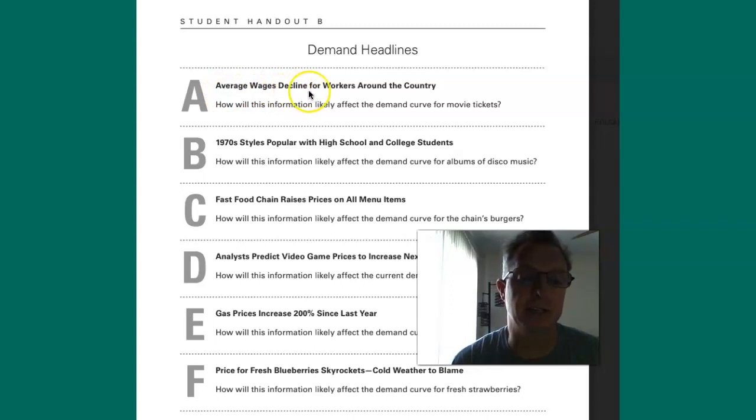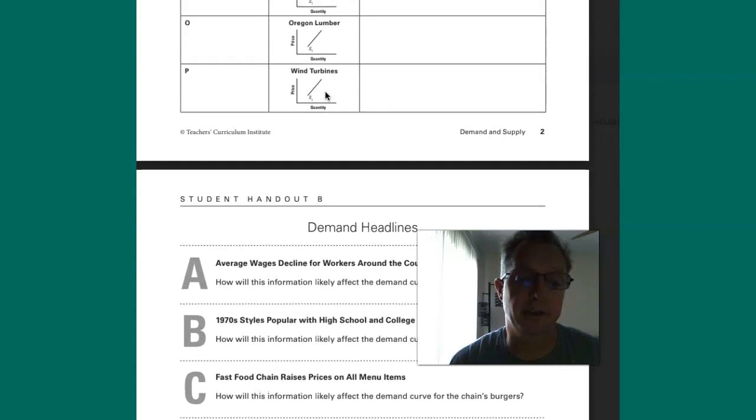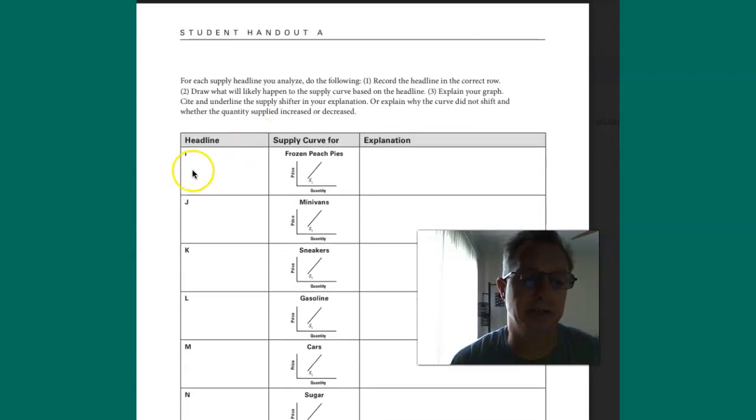The average wages decline for workers around the country. How will this information likely affect the demand curve for movie tickets? Okay, so if there's less workers around the country you would put that headline in here. Less workers around the country affecting income.